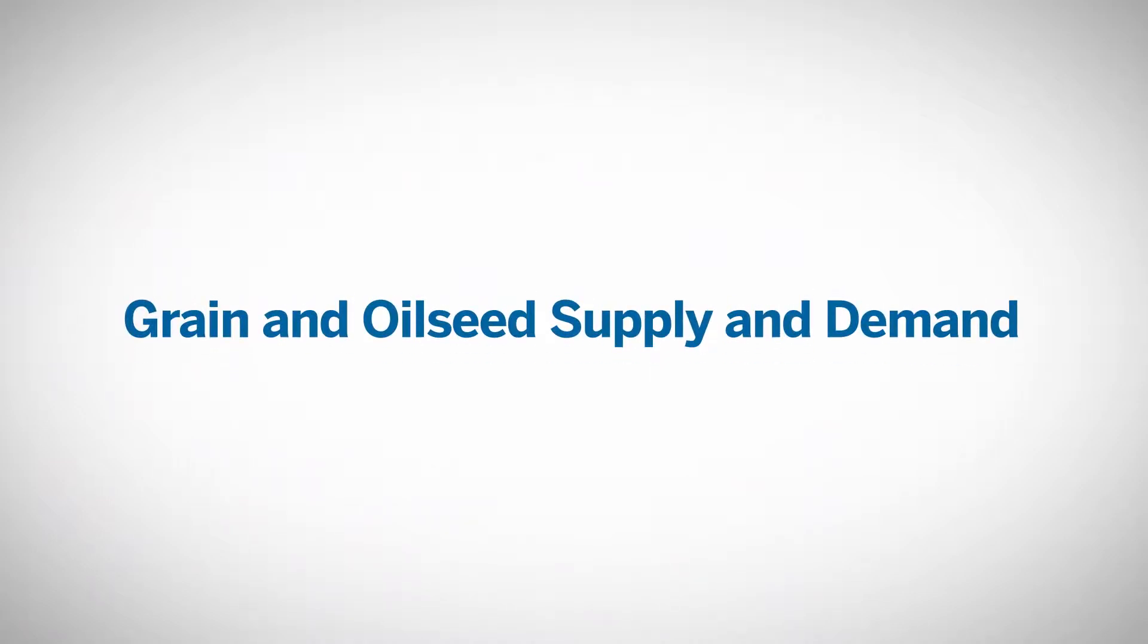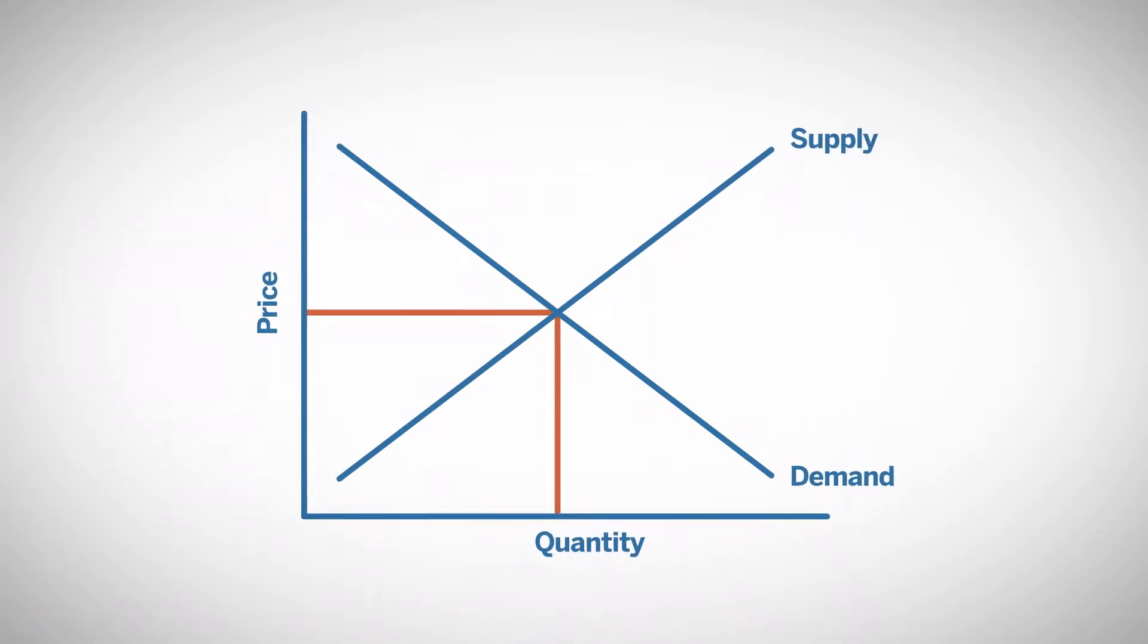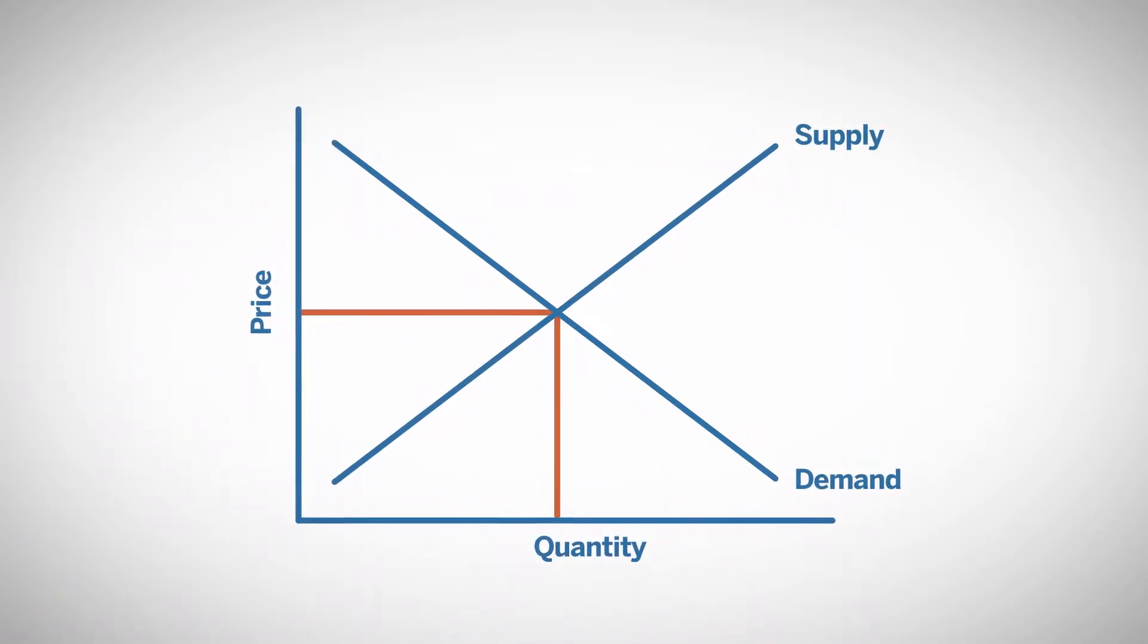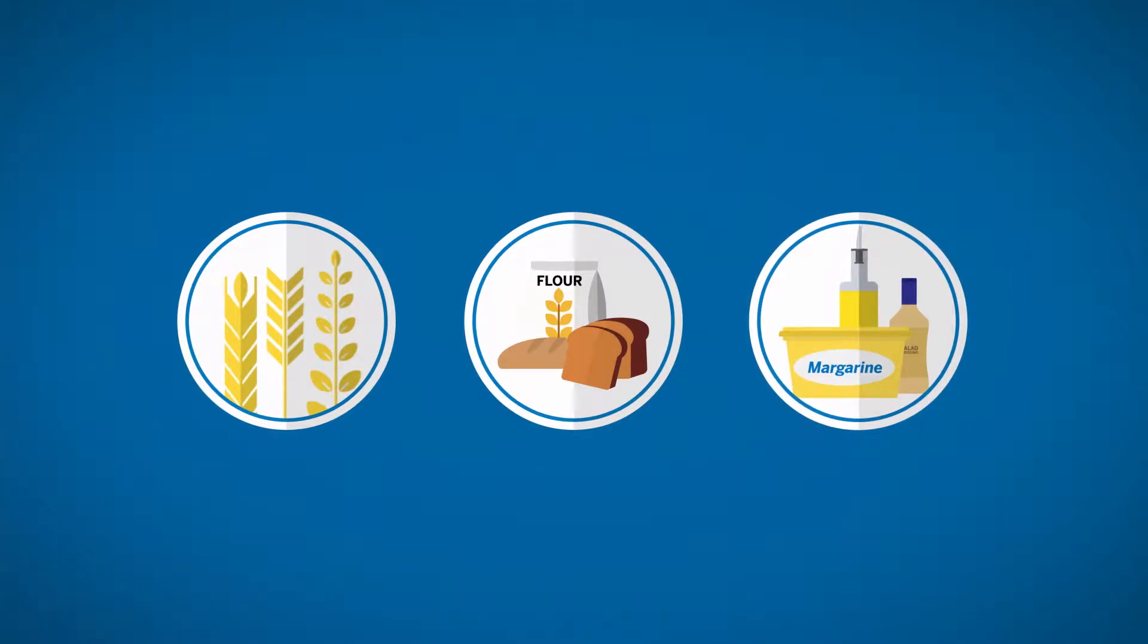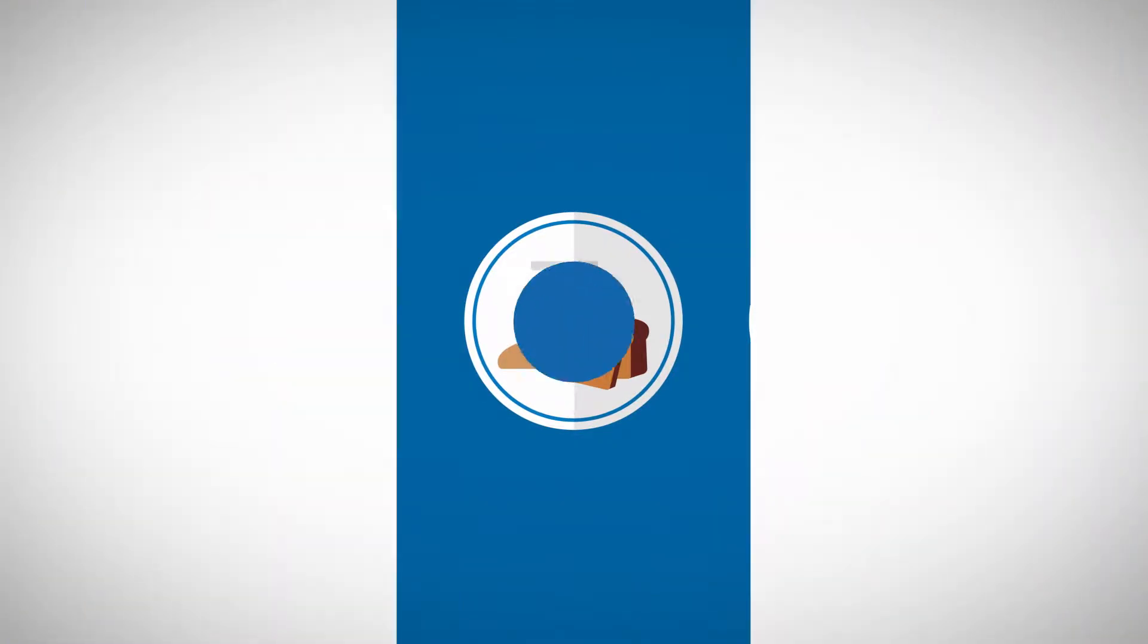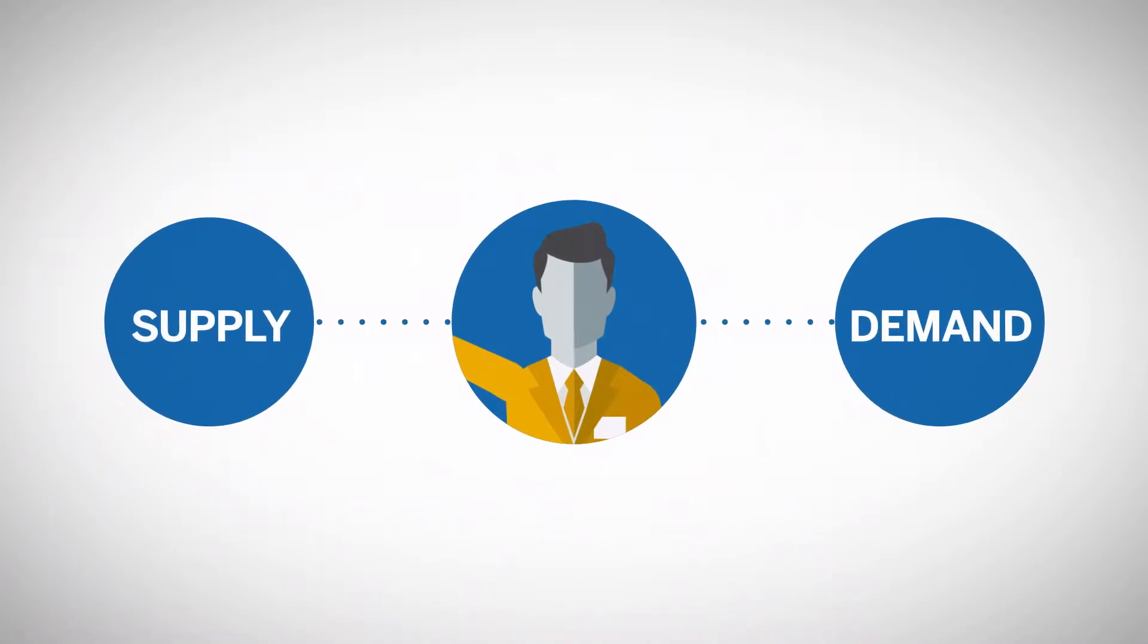As with all goods and services, the price of grain and oilseed products is determined by the intersection of supply and demand, which are affected by many factors. This module will review the primary elements that impact supply and demand for grains and oilseeds. For those interested in trading, being aware of these supply and demand elements will result in better understanding of these vital markets.